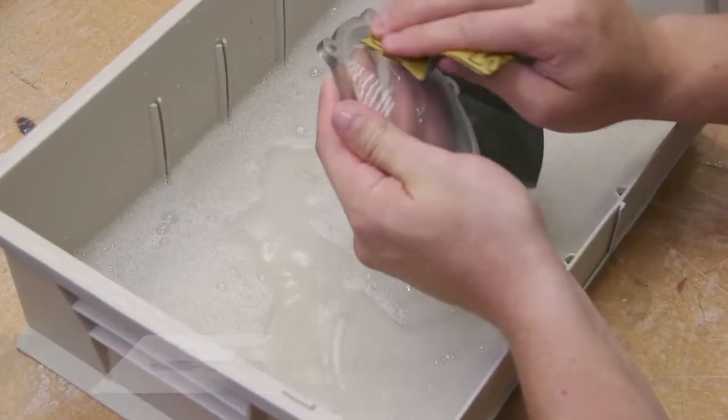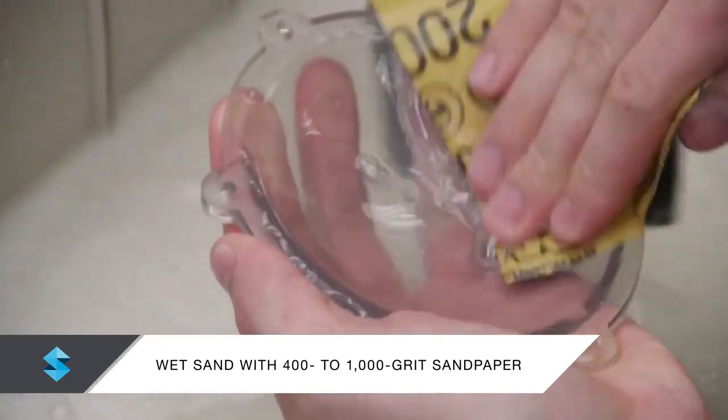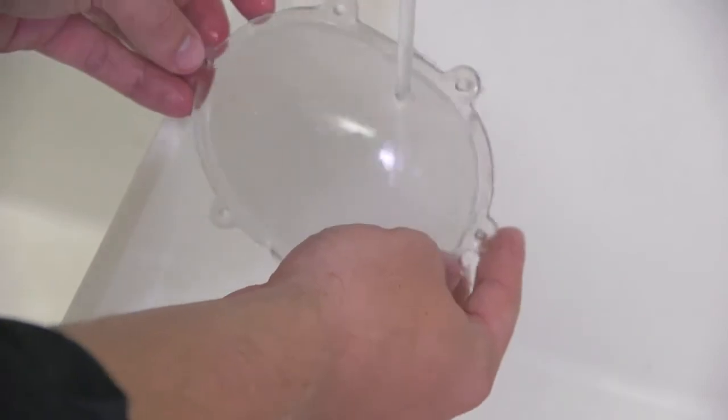To remove them, lightly wet sand the model with 400 grit, then 600 grit, and finally 1000 grit sandpaper. Rinse the model between each sanding to remove any dust or residue.